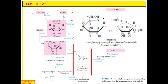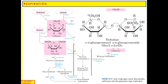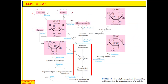Fructose is the furanose sugar and glucose is the pyranose sugar — pyranose is the six-membered ring and furanose is the five-membered ring. After breaking of sucrose, it produces glucose and fructose. Glucose enters glycolysis directly, but fructose enters in the form of fructose-6-phosphate. Mannose, which is the epimer of fructose, enters glycolysis via mannose-6-phosphate. Mannose-6-phosphate is the isomer of fructose-6-phosphate.